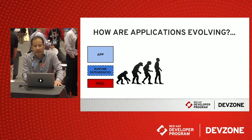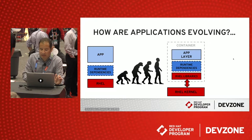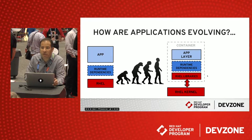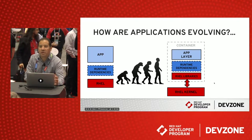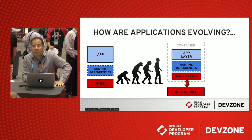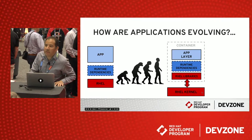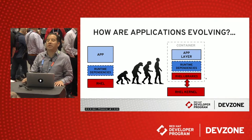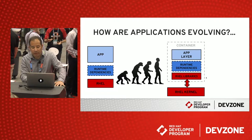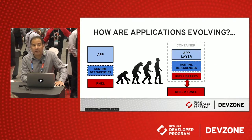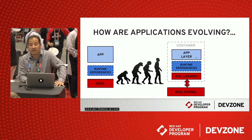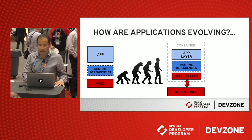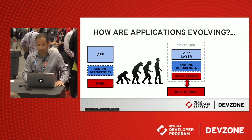Now let's look at what containers are bringing about in terms of evolution. You can still see the same pieces — the application and the runtime dependencies. Something interesting to notice is that the operating system is now segmented into two domains. At the very bottom we have the kernel and some basic services that allow you to run containers — this is what we refer to as a container host. Then the libraries are included in the container itself, only those libraries that the application needs to operate. The application provider builds an application layer, which may include runtime dependencies as another layer, and then the Linux libraries needed to operate.